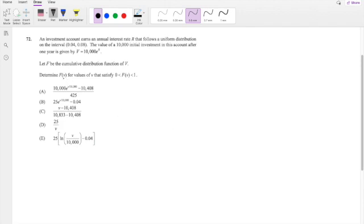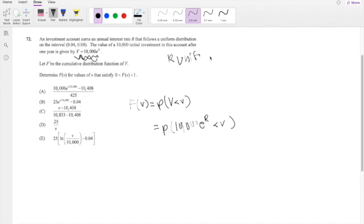So they tell us to find the probability, the CDF function for F of V. We know that F of V is equal to the probability that big V is less than little v. So plugging in our V here, this is equal to probability that 10,000 e to the R is less than little v, where the R function is uniform on 0.04 to 0.08.